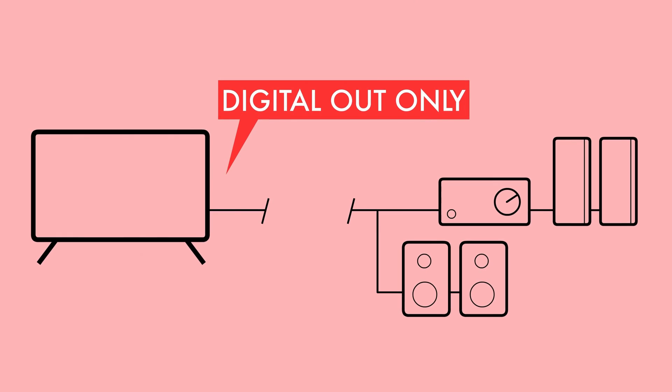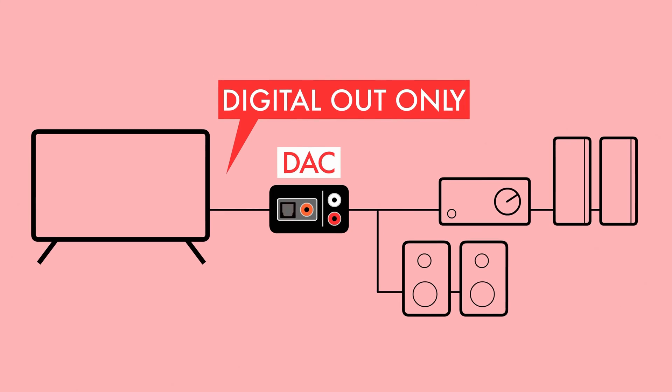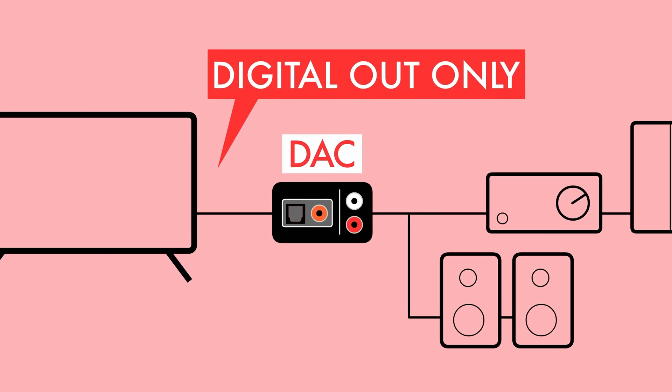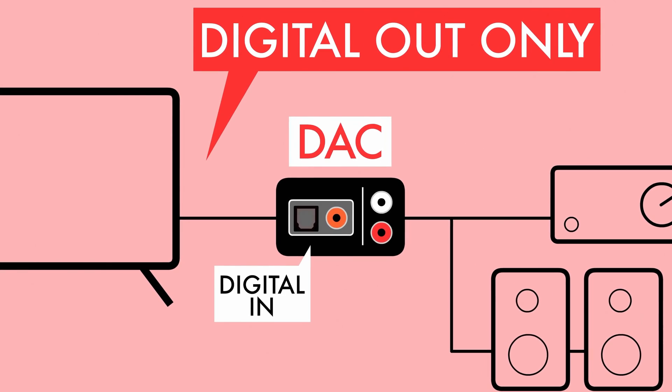Some devices, especially newer TVs, only have a digital SPDIF output. So if you want to connect them to an analog hi-fi system — such as an analog amplifier with passive speakers or active powered speakers — you're going to need a digital to analog converter, also referred to as a DAC. A DAC accepts a digital input and converts it to an analog stereo out, which you can then connect to your analog system.